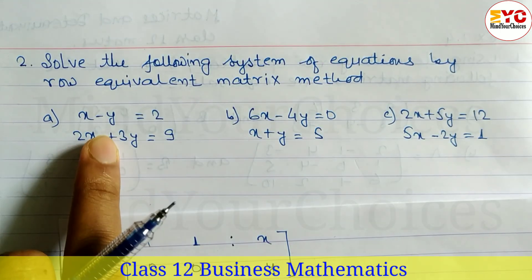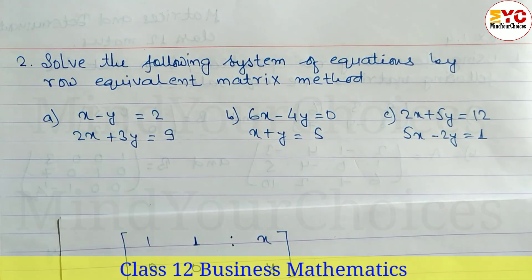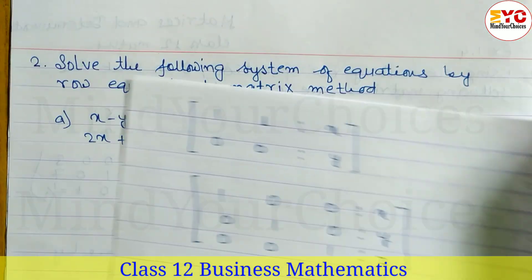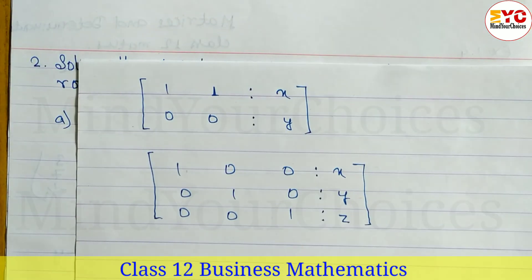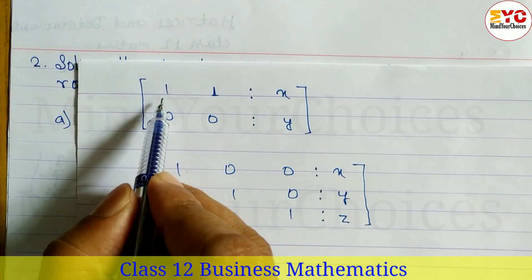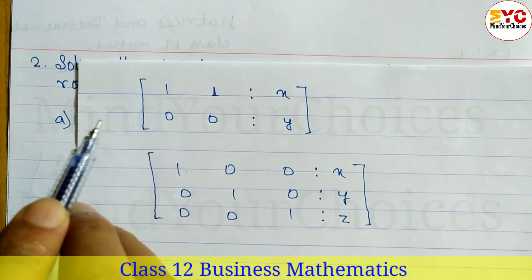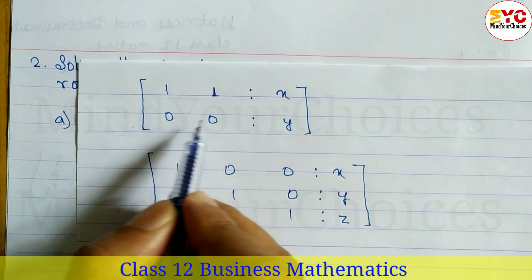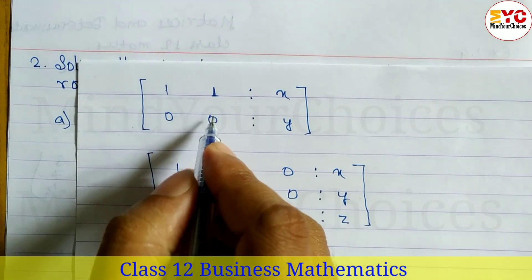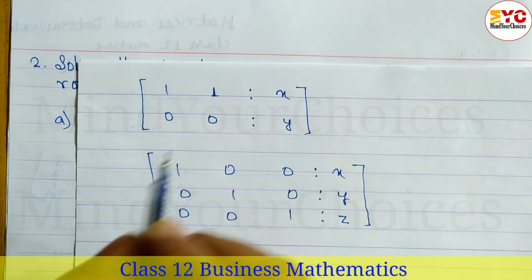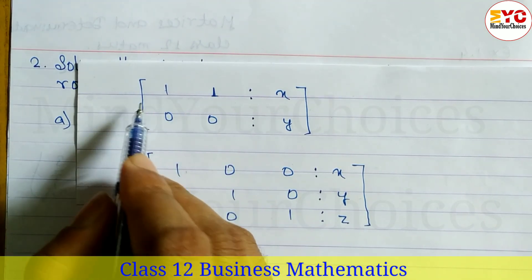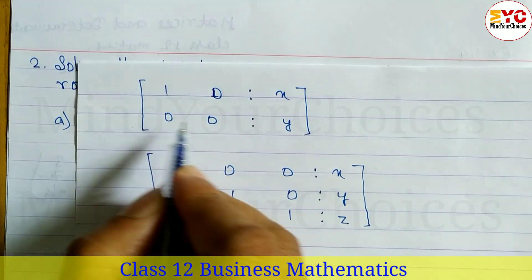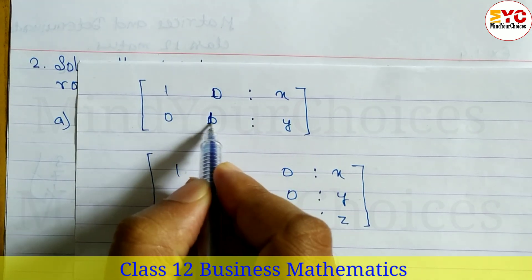These two variables mean a 2×2 matrix. We have to find out the identity matrix: 1, 0, 0, 1.